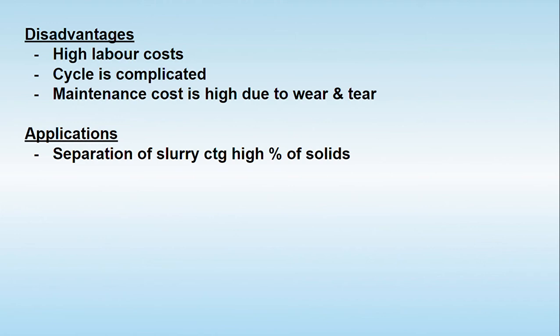The limitations are that the labor cost is high, the separation cycle is somewhat complicated, and the maintenance cost is also high due to wear and tear from the rotating parts. Despite this, it is widely used for the separation of slurries containing a higher percentage of solids in various industries. This concludes the horizontal continuous centrifuge.